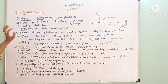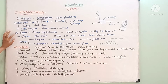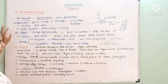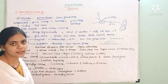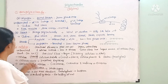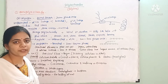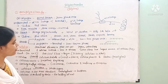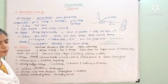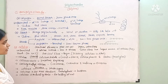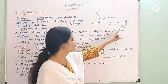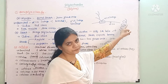Starch is similar to glycogen — it is also a storage polysaccharide. While glycogen stores excess carbohydrates in animals, starch stores excess carbohydrates in plants. Starch has a helical secondary structure and will fold like a helix.